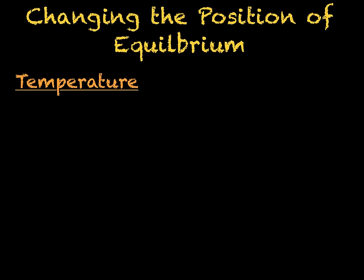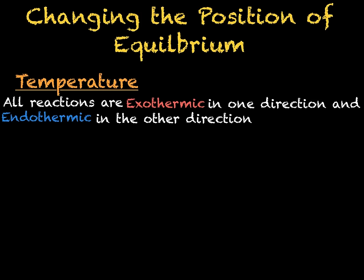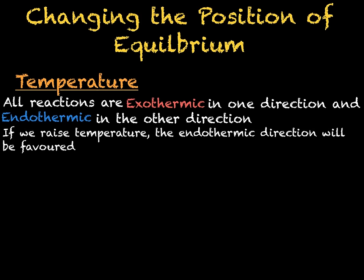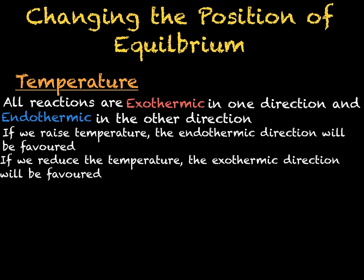As you may remember, all reactions are either exothermic or endothermic. For reversible reactions, this means that in one direction the reaction will be exothermic and in the opposite direction it will be endothermic. If we raise the temperature, then the endothermic reaction will be favoured as it will use up the extra heat. Likewise, if we reduce the temperature, then the exothermic reaction will be favoured as it is able to give out more heat into the surrounding environment.